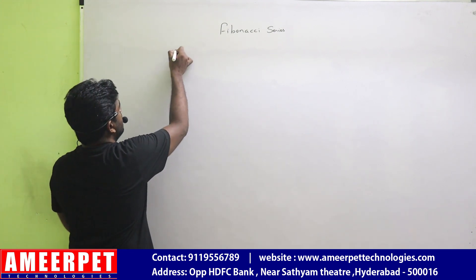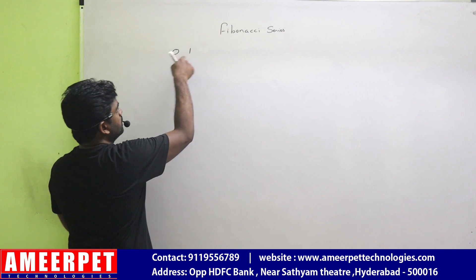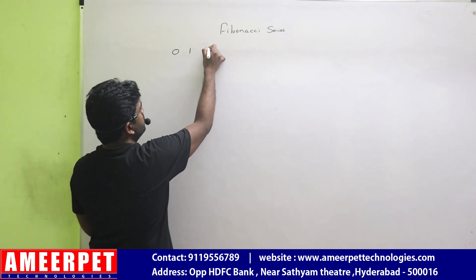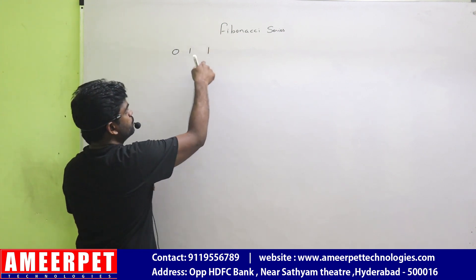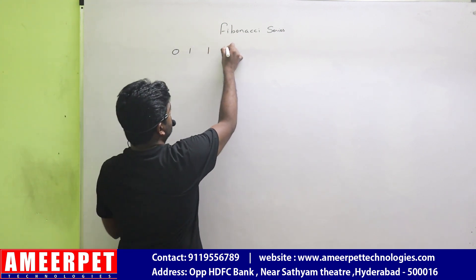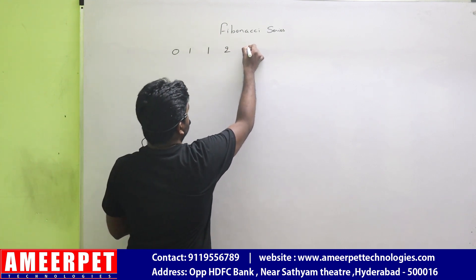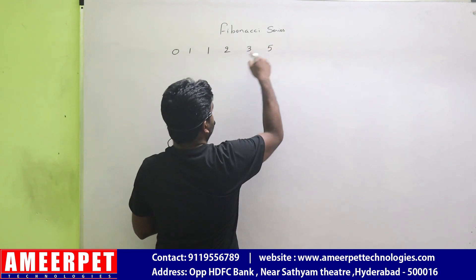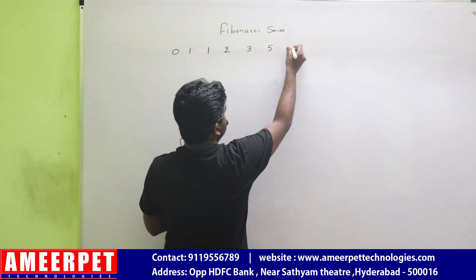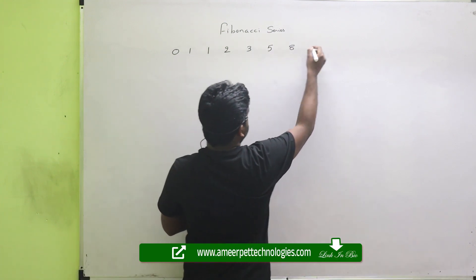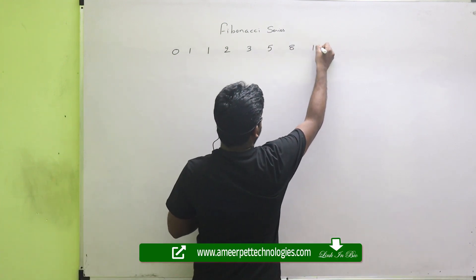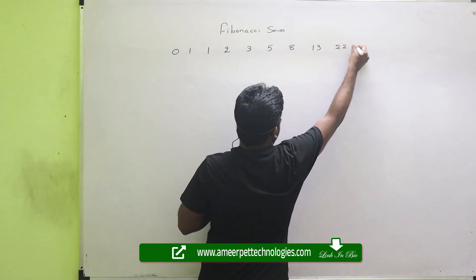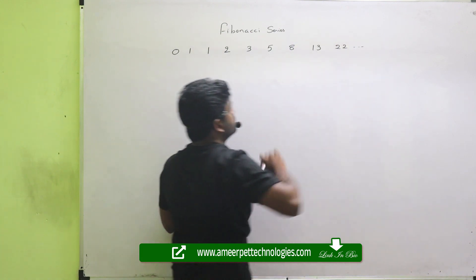If I start the series with two numbers, just adding these two numbers: 0 plus 1 is 1. 1 plus 1 is 2. 1 plus 2 is 3. 2 plus 3 is 5. 3 plus 5 is 8. 5 plus 8 is 13. 8 plus 13 is 22. Like that the series will go.